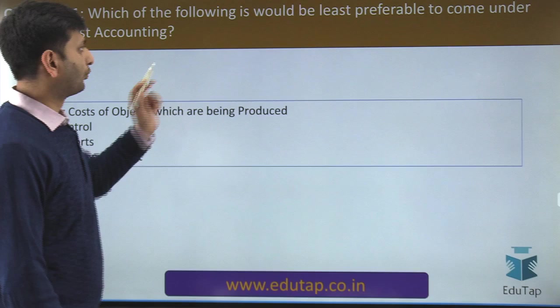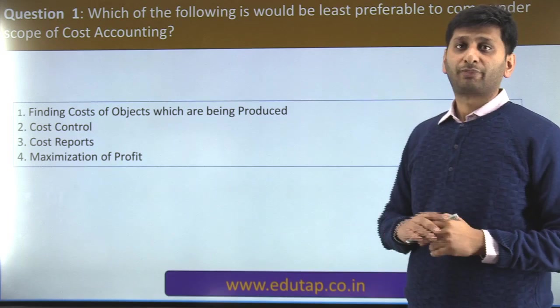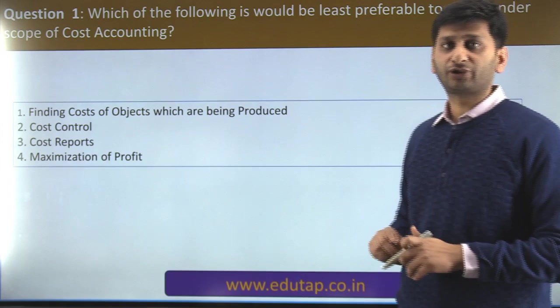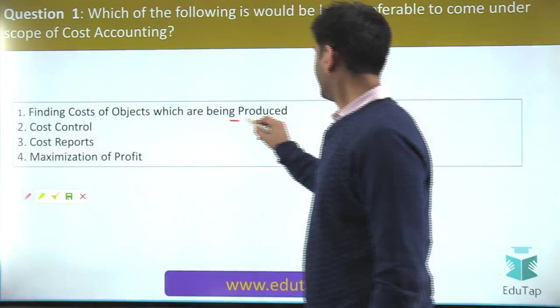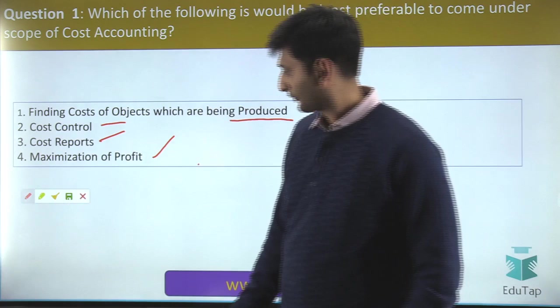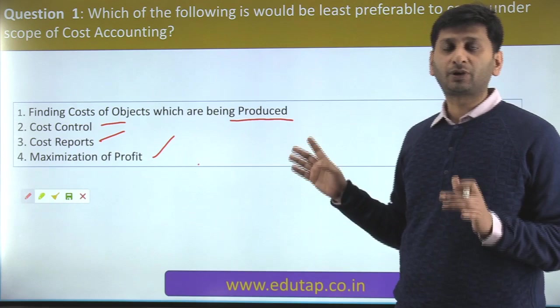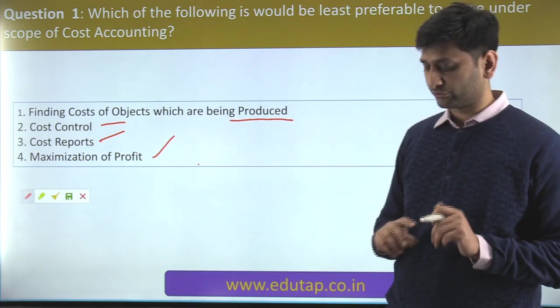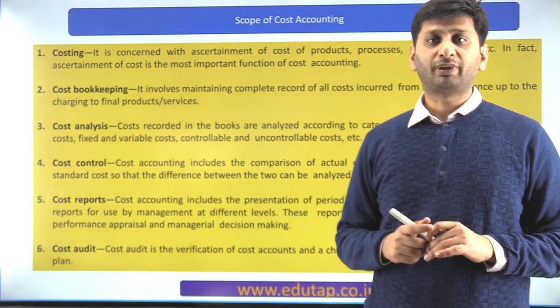Let's come to the first question. Which of the following would be least preferable to come under the scope of cost accounting? The options are: finding cost of objects being produced, cost control, cost reports, or maximization of profit. The idea is not to jump to the answers — I shall explain the concept of scope of cost accounting and then come back to the answer.